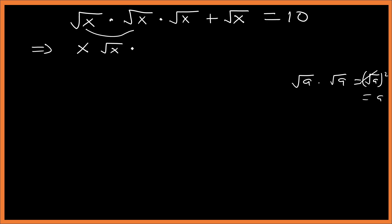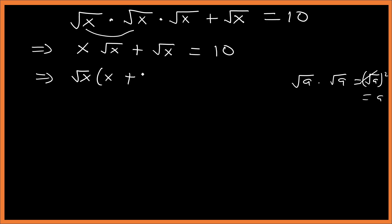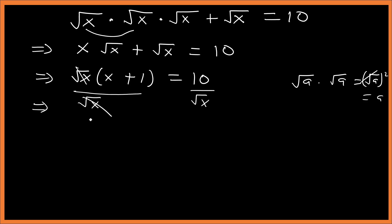So we have x times square root of x, plus x equals 10. Now let's observe — we have square root of x in common, so let's take it out: square root of x times (x plus 1) equals 10. Now let's divide both sides by square root of x, so we have x plus 1 equals 10 over square root of x.